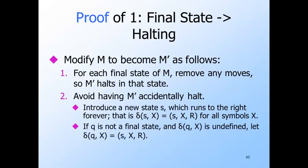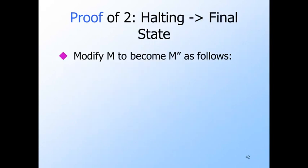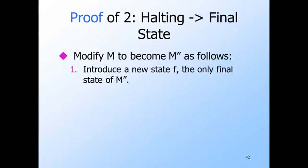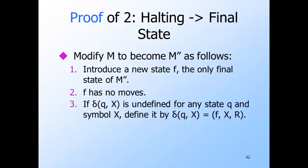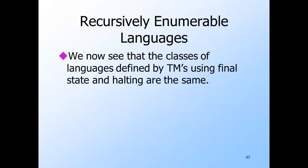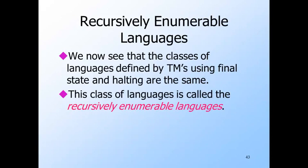The construction in the other direction is also pretty easy. We assume M accepts some language L by halting, and we want to modify it to become M″, which accepts L by final state. We introduce a new state F, which is the final state of M″. F has no move. If M halts in any situation — that is, delta of (q, x) is undefined — define it and make the next state be F. Once a Turing machine enters a final state, nothing it does in the future negates the fact that the input was accepted. We now have a proof that the class of languages accepted by final state is the same as the class accepted by halting. The name for this class is the recursively enumerable languages.